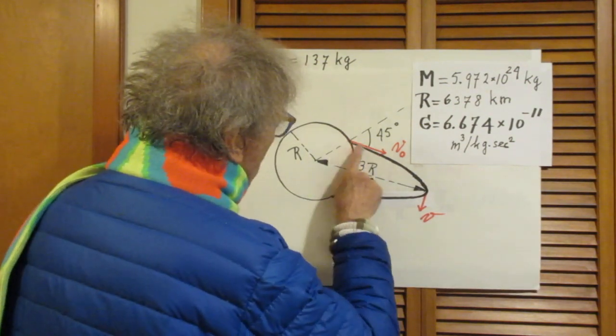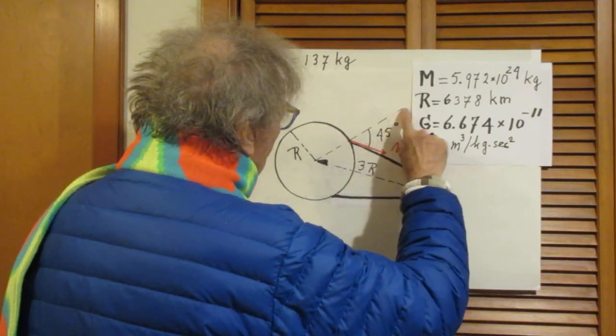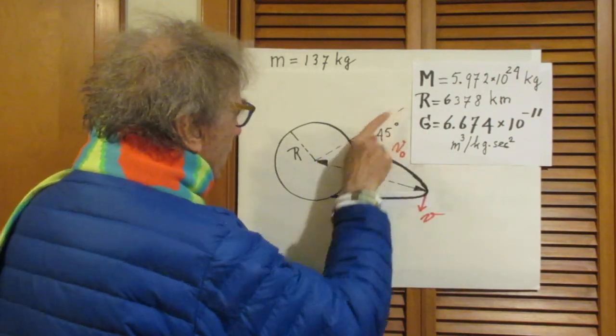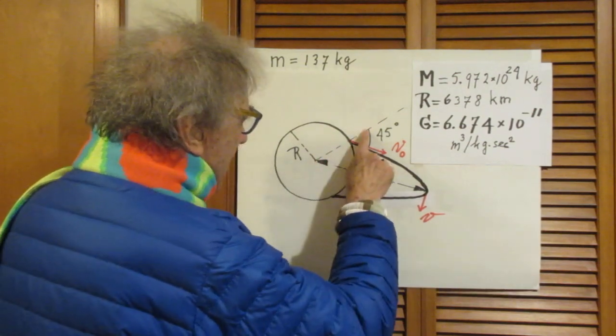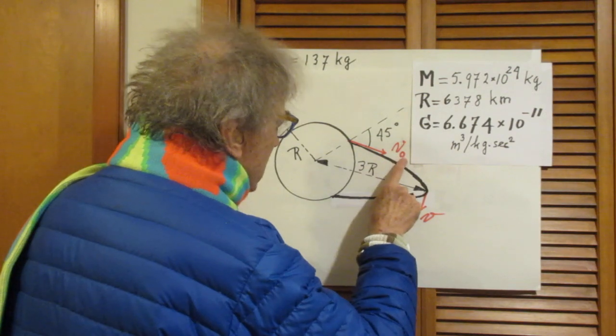And I launch that object at an angle 45 degrees from my vertical. So I'm standing here, this is my vertical, this is the center of the planet. This angle is 45 degrees and I launch it with a speed v0.